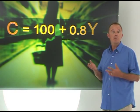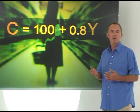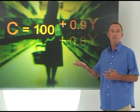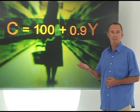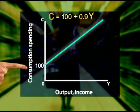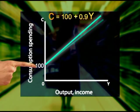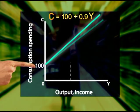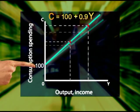If the marginal propensity to consume changes from 0.8 to 0.9, a hundred rand rise in income now causes consumption spending to increase by ninety rand, not eighty rand.